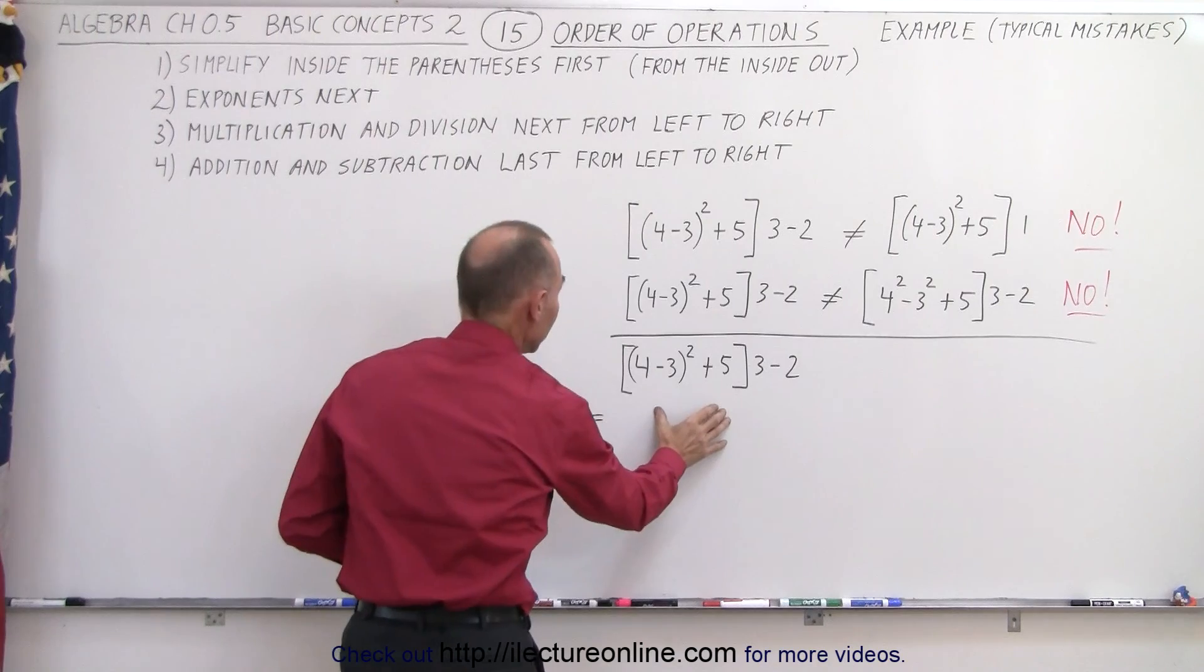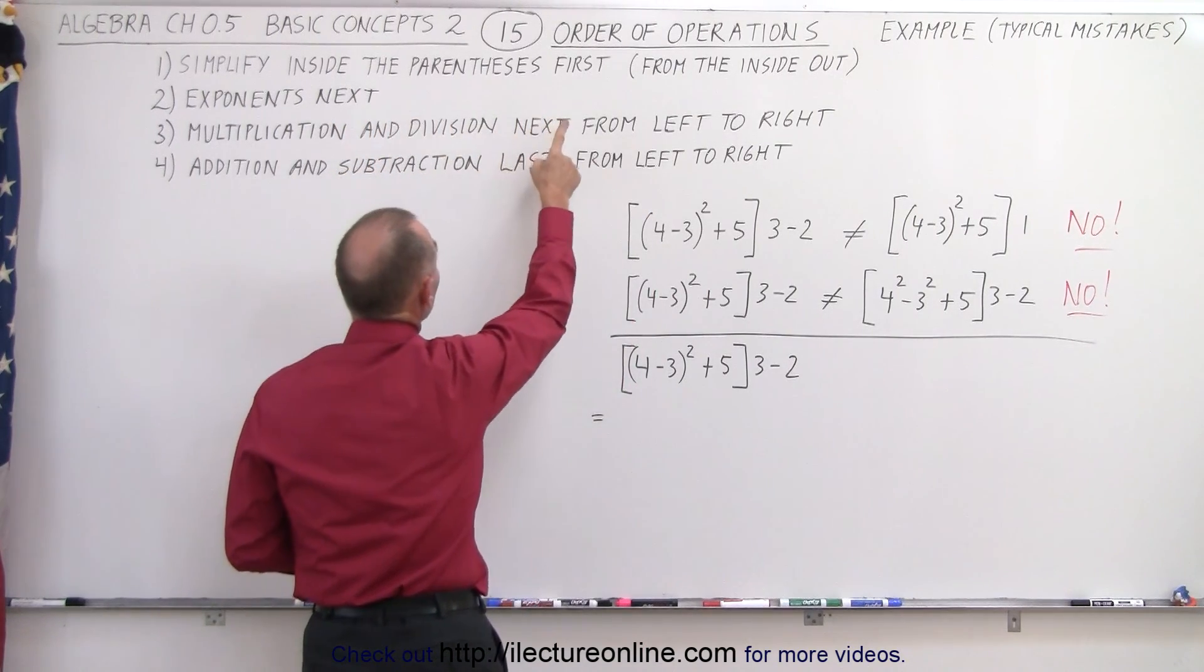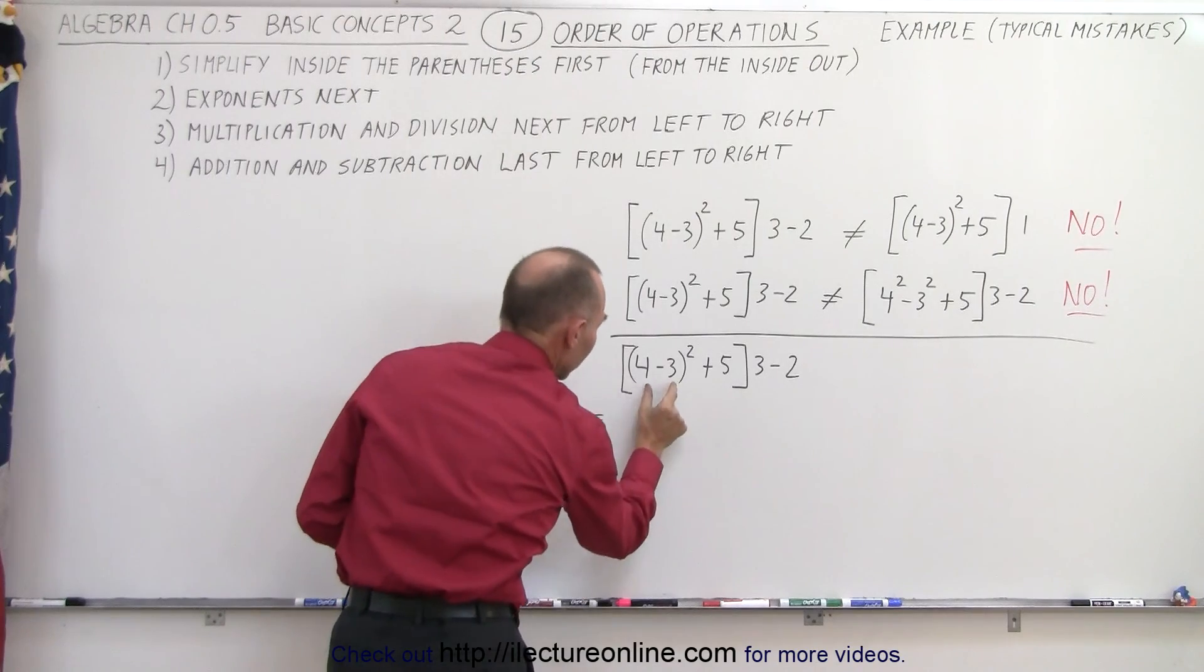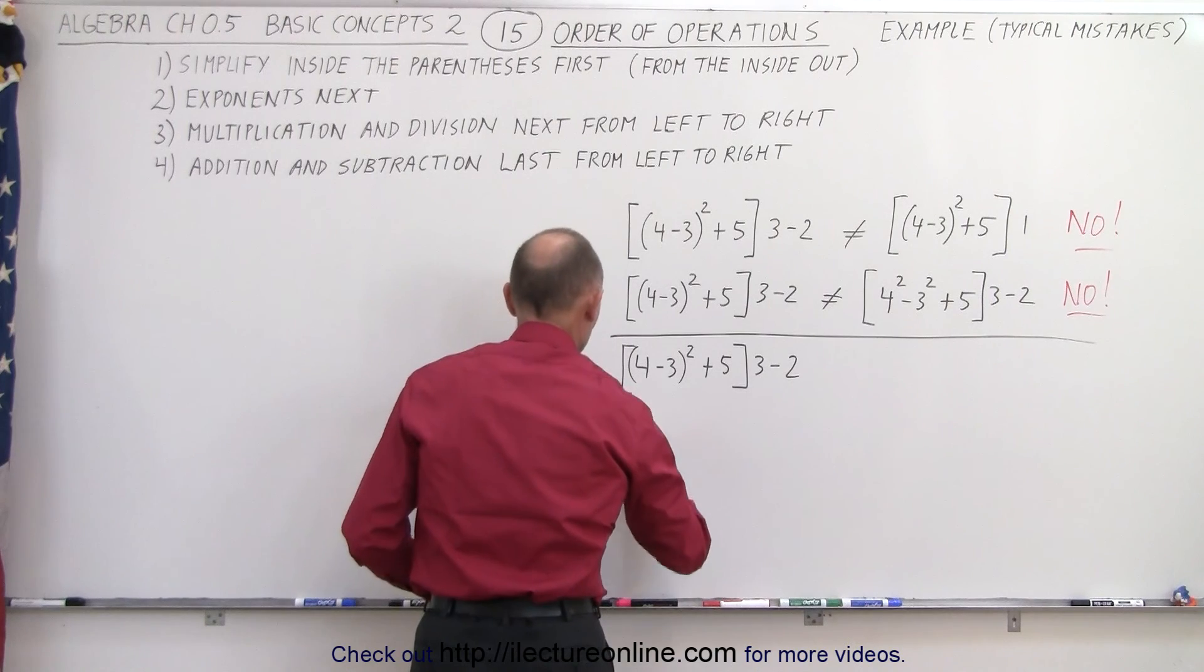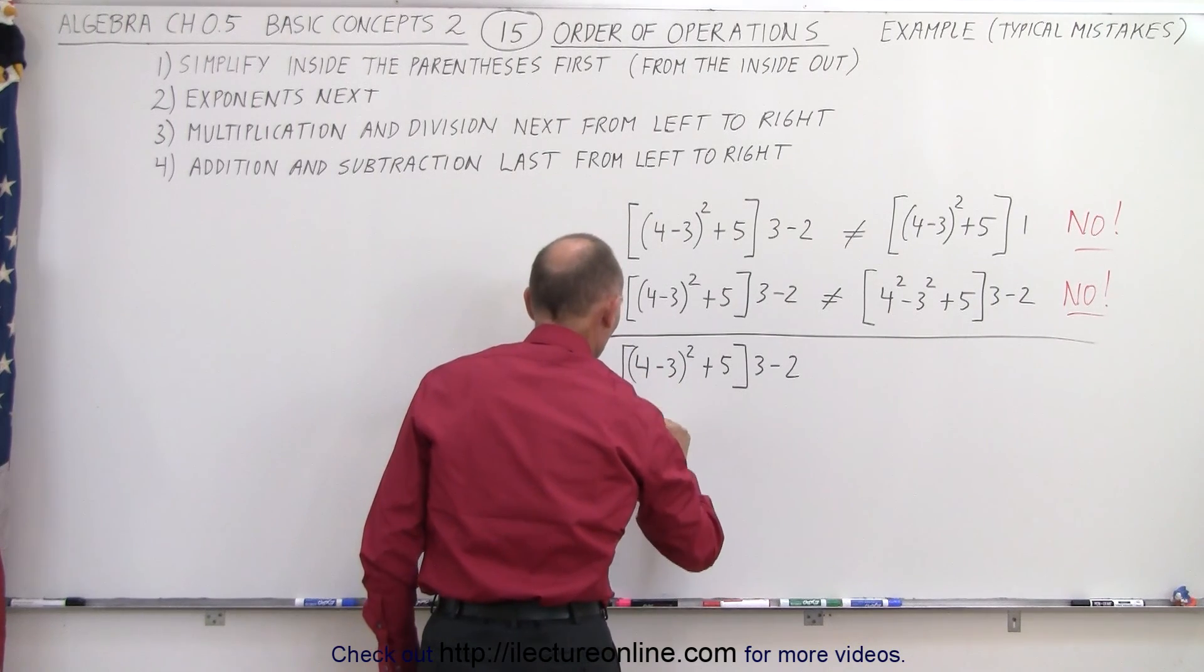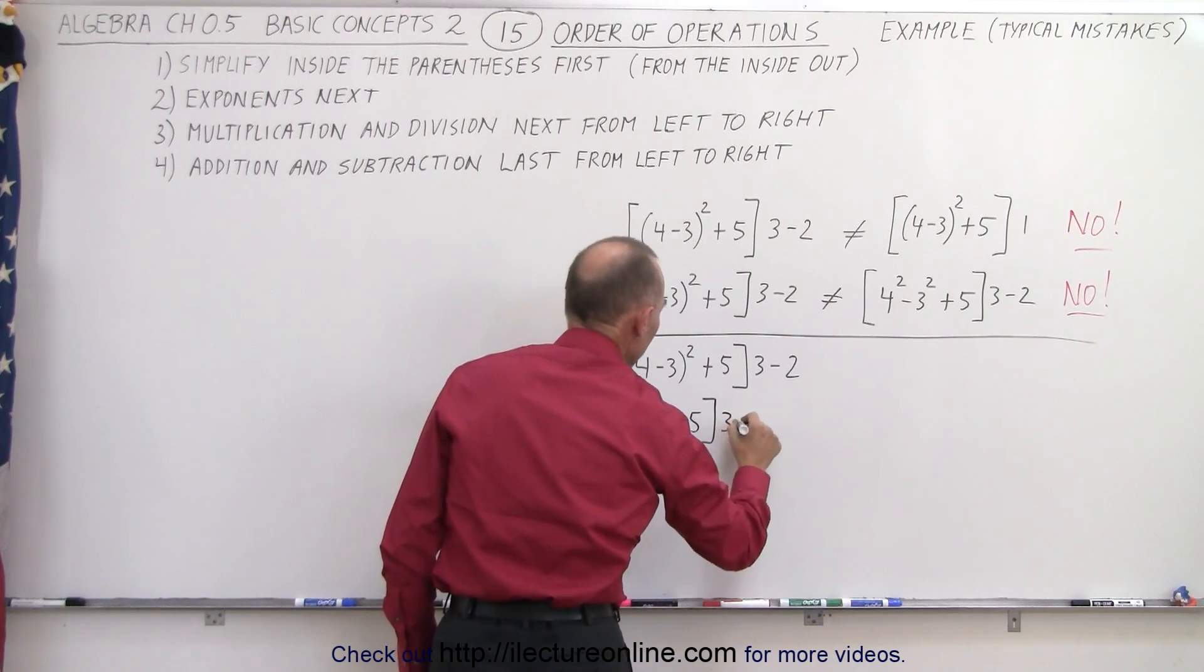So here's the exercise again. It tells us simplify inside the parentheses first from the inside out. We take a look at the inside parentheses and take care of that first. This becomes: we still keep the bracket, (4-3) which is 1, squared plus 5, times 3 minus 2.